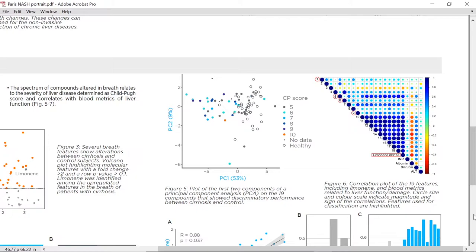We then investigated the relation between alterations of breath compounds and severity of cirrhosis. All 19 compounds with discriminatory potential were used to perform a principal component analysis. As we can see in Figure 5, PC1 and PC2 represent respectively 53% and 9% of variance, and principal component 1 shows a separation of patients with Child-Pugh score higher than 5.